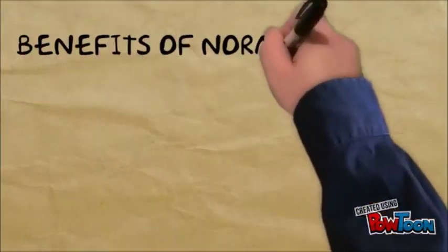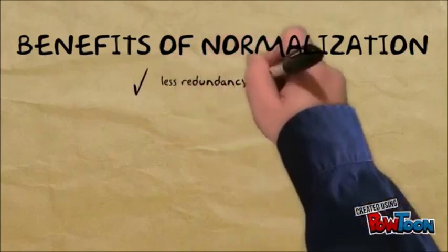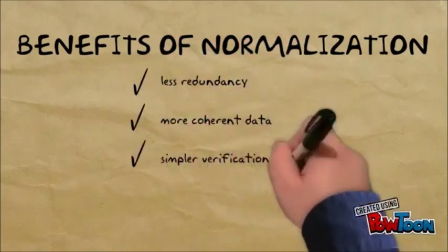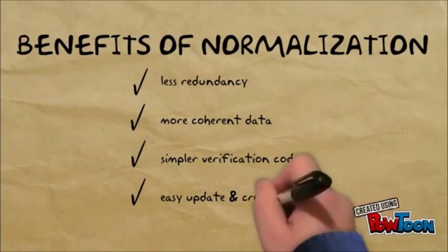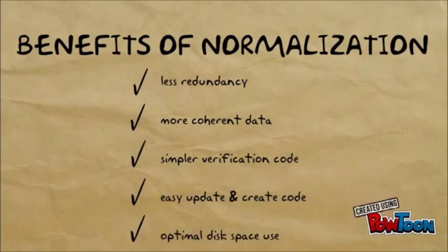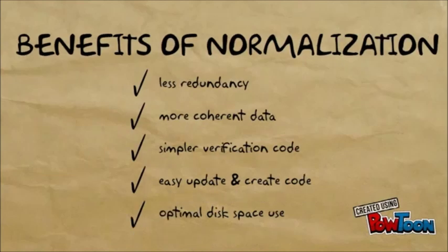Normalization makes databases more robust, as it reduces data redundancy and ensures that they stay coherent whenever you create or update them. In normalized databases, verification code tends to be simpler and smaller. The same goes with update and creation transactions, as you typically don't need to enter the same data in more than one table. When done properly, you can also reduce the amount of disk space needed by the database, as normalization would allow for data reuse.